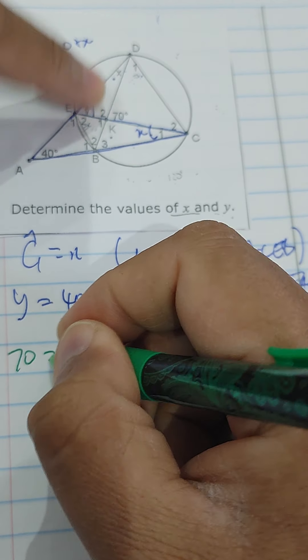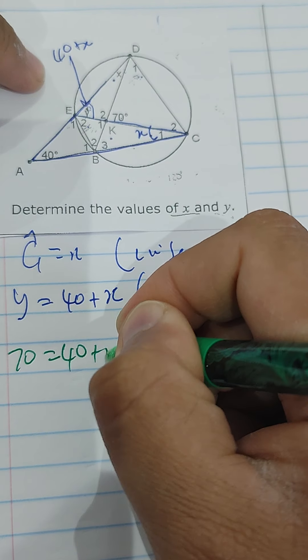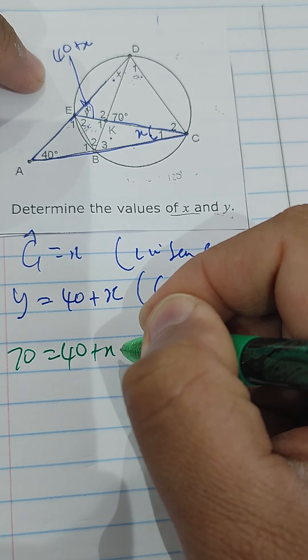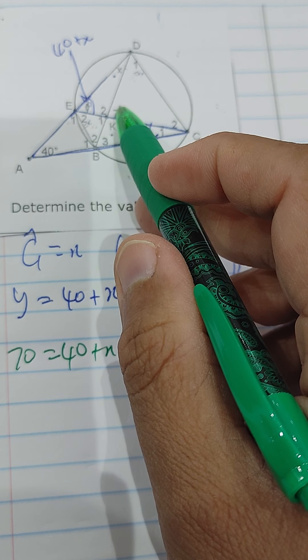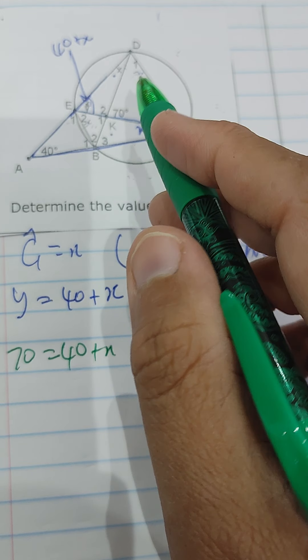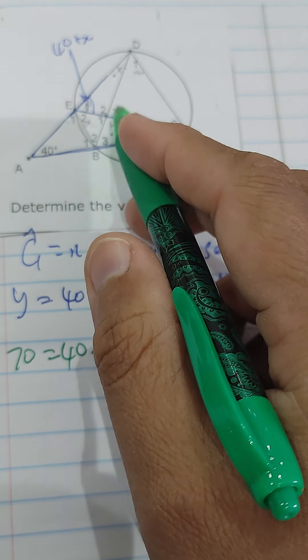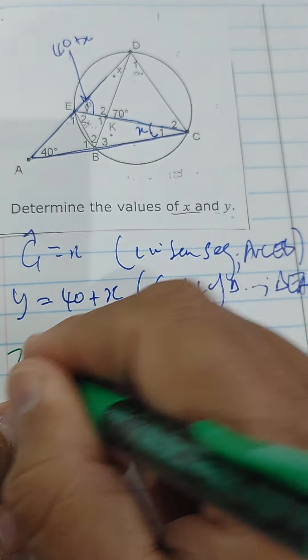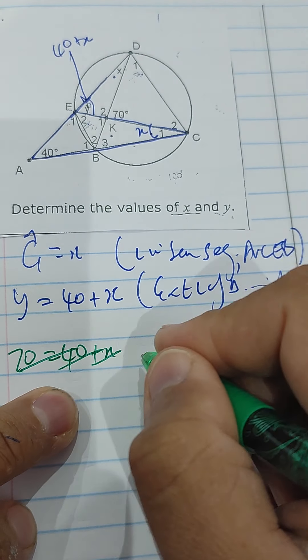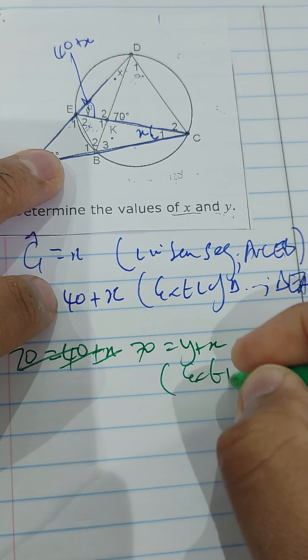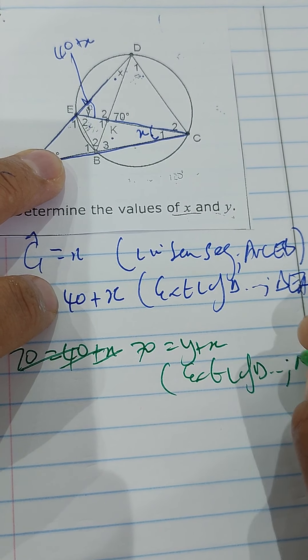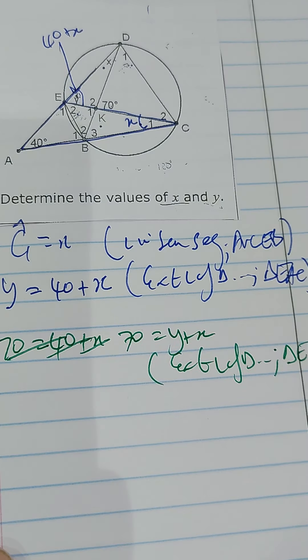is again x, equal to sum of the opposite. Then we have another triangle here. 70 is equal to 40 plus x. Wait, wait. 70 is equal to y plus x. I'll put that in there. 70 is equal to y plus x. The reason here is exterior angle of triangle, and it's triangle EKD.